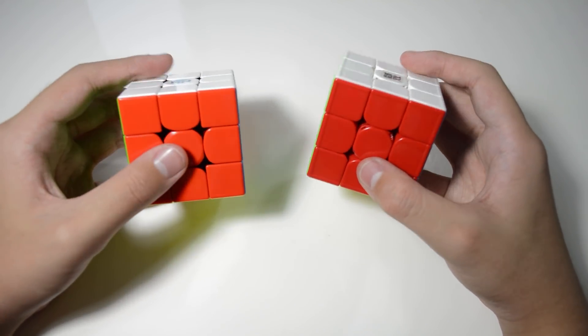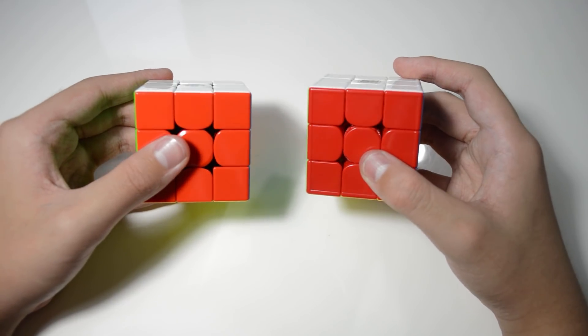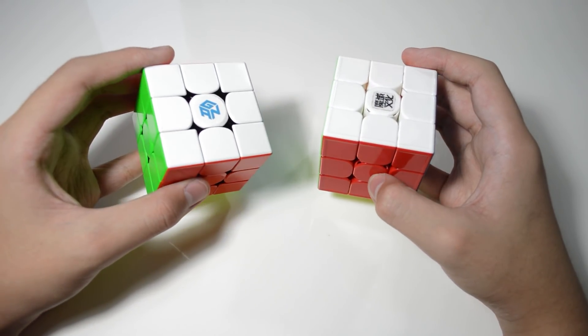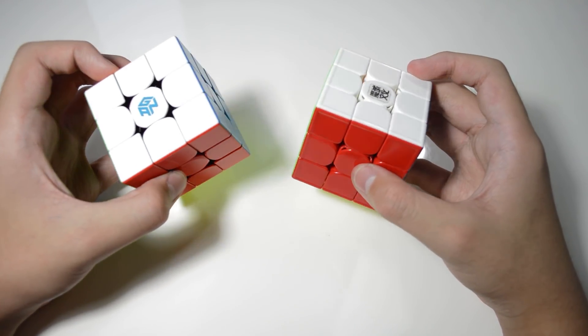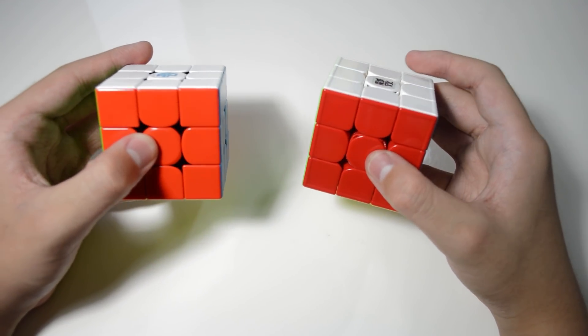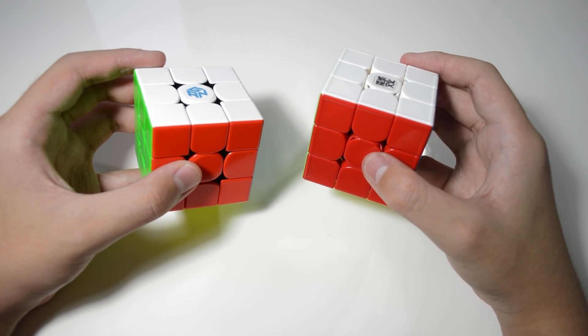Therefore, the decision whether to pick up the GTS-3M or the 356X is situational. Both are advanced and versatile speedcubes, which would probably not be appropriate for the beginner speedcuber. Both cubes are also 3x3s with rich histories.